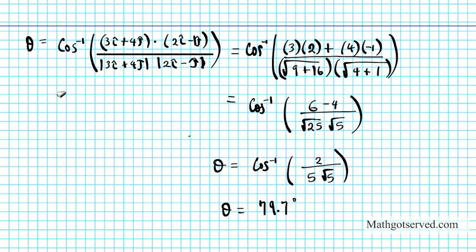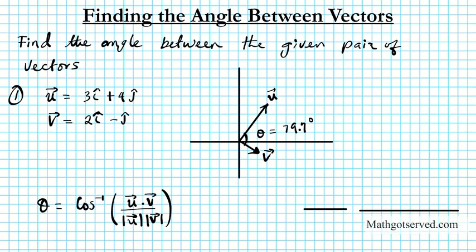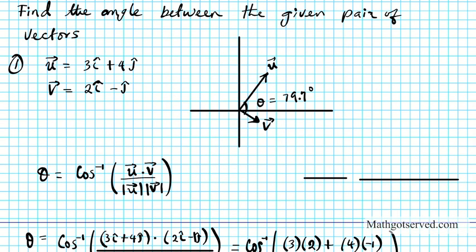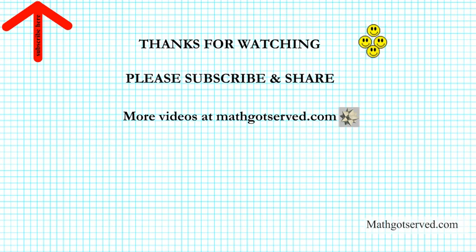So what does this mean graphically? Going back to the original sketch we made, it basically means that the angle between these two vectors is 79.7 degrees. That's how you calculate the angle between two vectors using the dot product formula and its inverse cosine derivation. Thanks so much for taking the time to watch this video — please feel free to subscribe to my channel. More videos coming soon. Thanks again and have a wonderful day!